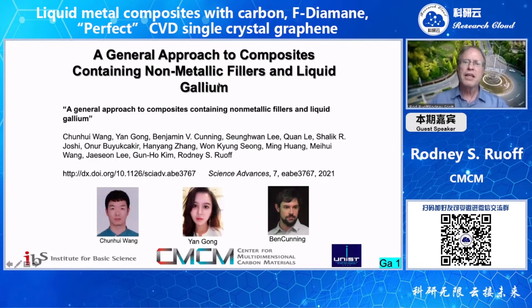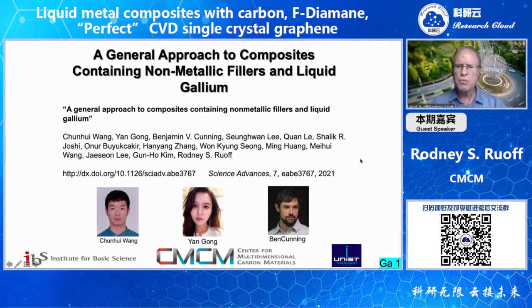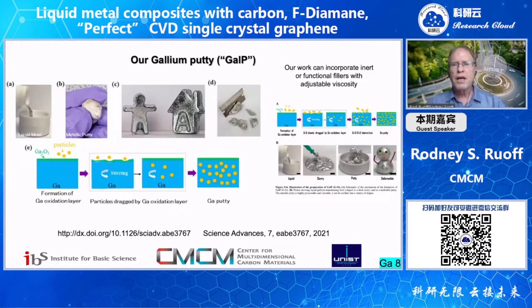Now let's talk about composites containing non-metallic fillers — particularly carbon-based fillers with liquid gallium, but also its eutectics: gallium with indium, gallium with tin, and gallium with indium and tin. These co-authors worked on this, which we published in the January issue of Science Advances. With our putty-like material that comes from taking liquid gallium and mixing with different carbon fillers, we can make these sorts of different shapes.